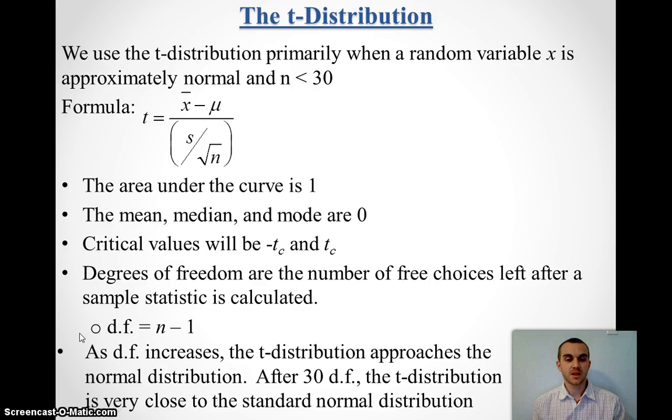Now, the reason we care about this is that as our degrees of freedom increase and our sample size increases, once we get to about 30, our t-distribution pretty much becomes the standard normal distribution, and at that point, we can go back to z-scores, which are easier to calculate.